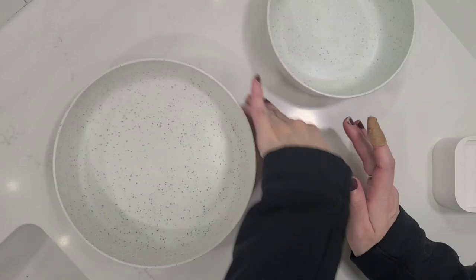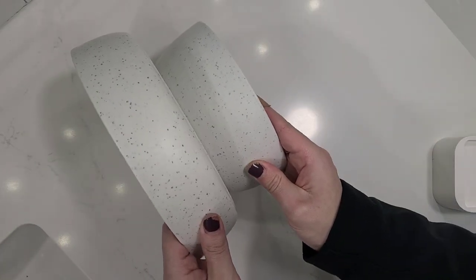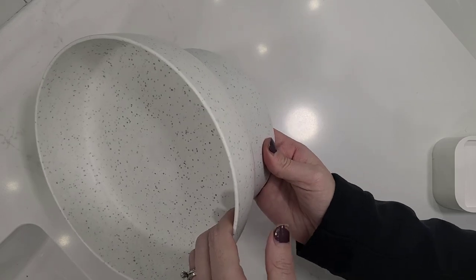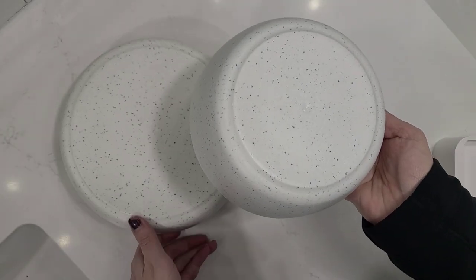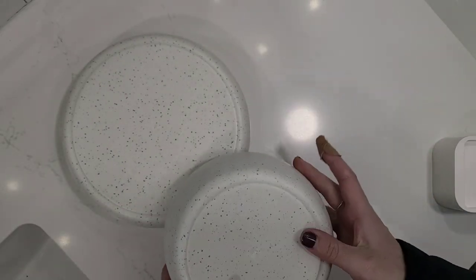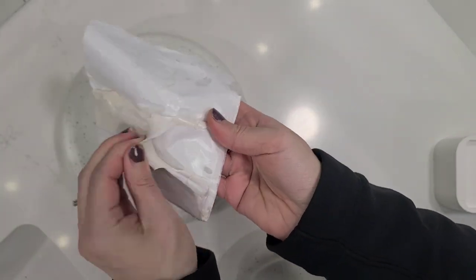Next, all we're going to do is attach the smaller bowl to the bottom of the larger bowl, and that's how we're going to make it. So you could hot glue this, you could use super glue. I thought about doing that and then I thought back to this museum putty stuff that I've used in the past.